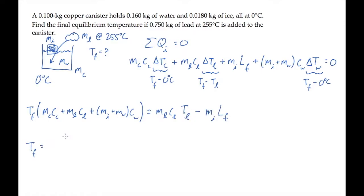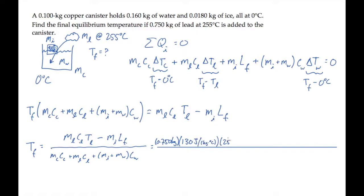That gives us this result, which we can substitute all the known values into. We know all the masses, and we can look up the specific heats and the latent heat of fusion. The latent heat of fusion for water is 334 times 10 to the third joules per kilogram. Copper's specific heat is 390 joules per kilogram degree Celsius. And water's specific heat is 4190 joules per kilogram degree Celsius.